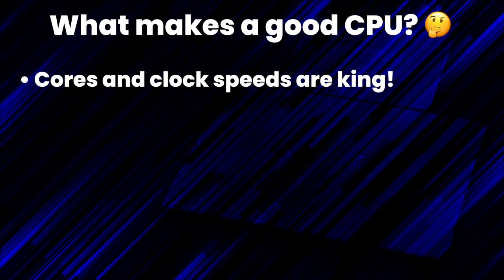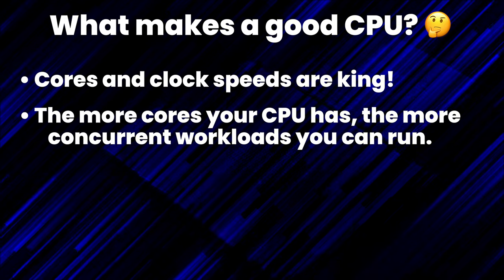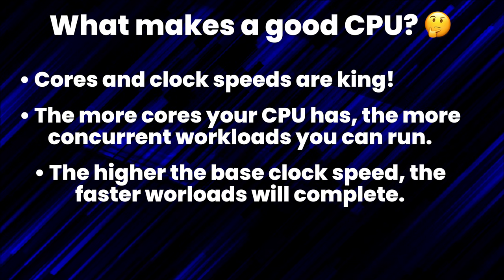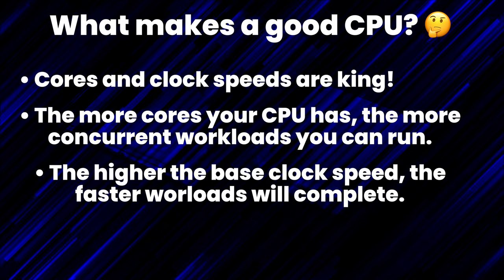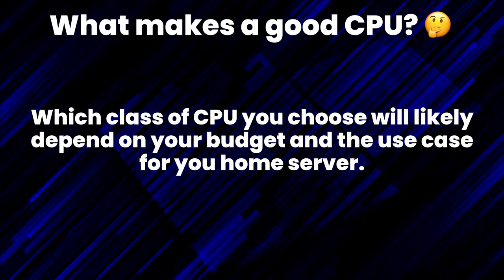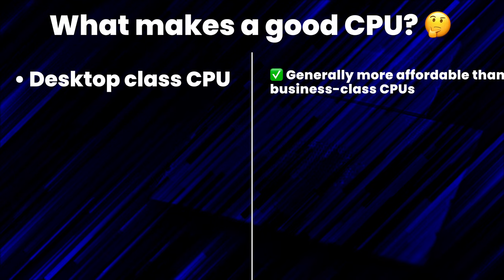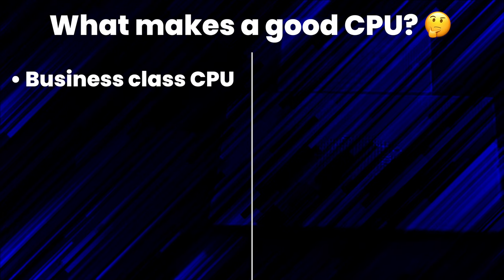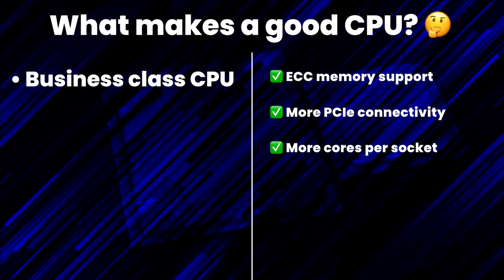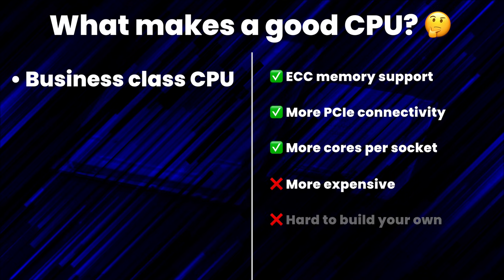Both AMD and Intel make CPUs for both of these verticals, and both will work fine for a home server. In all CPUs, cores and clock speeds are the key deciding factors. The more cores you have, the more parallel tasks you can execute concurrently — core count is especially important if you're virtualizing. Clock speed matters too: slower chips compute slower, meaning you'll wait longer for tasks to complete. Desktop-class systems are typically more affordable and easy to build yourself. Choosing a business-class CPU unlocks server-grade features like ECC memory, more PCIe lanes for adding cards, and typically more cores per socket. I'm a fan of server-grade hardware for the additional features like ECC memory support, increased bus connectivity, lights-out remote access, and more — so we're going to focus on business-class CPUs for this build.